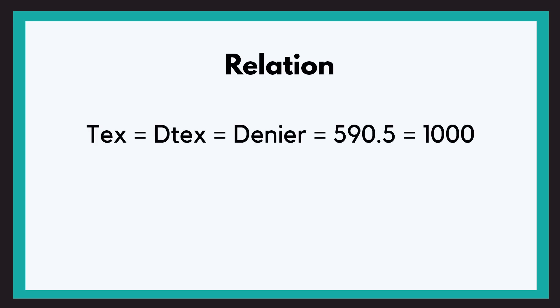So the trick is to learn just one relation. And the relation is Tex equals DesiTex by 10 equals Denier by 9 equals 590.5 divided by Ne that equals 1000 upon Nm.